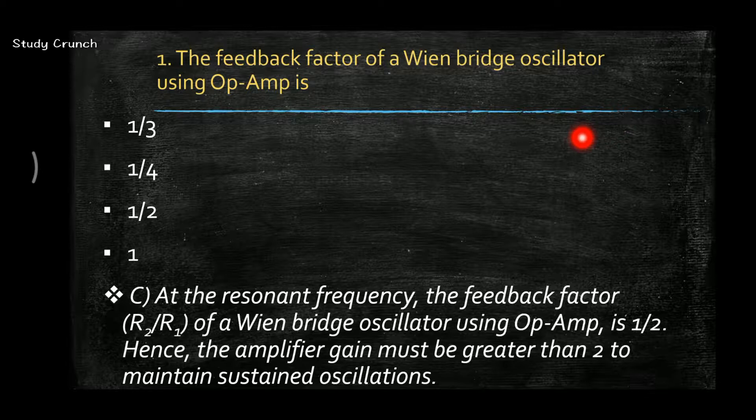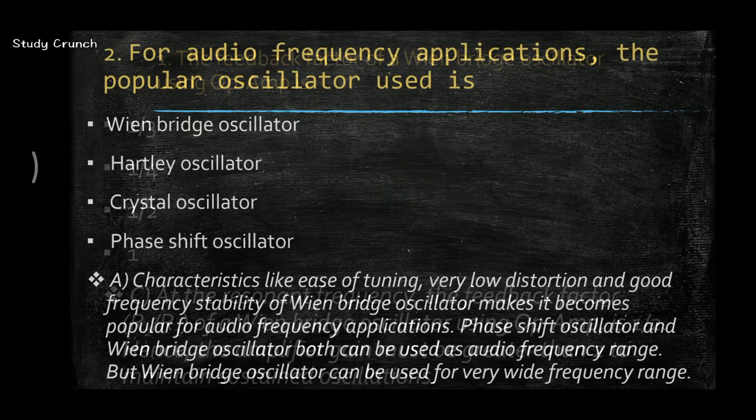R2 by R1 of Wien bridge is half, so the gain of the amplifier must be greater than 2 to maintain sustained oscillations.